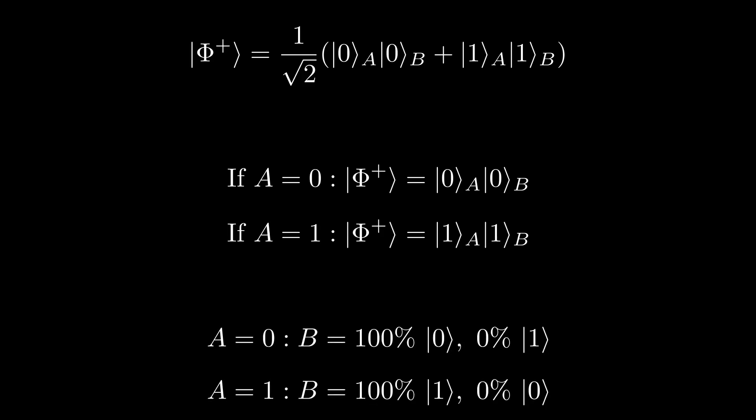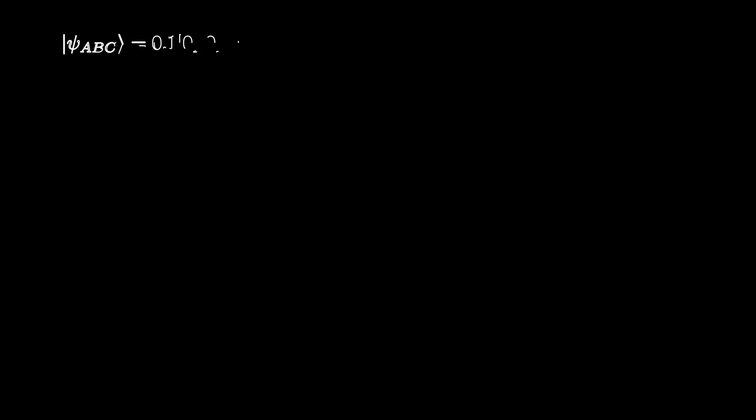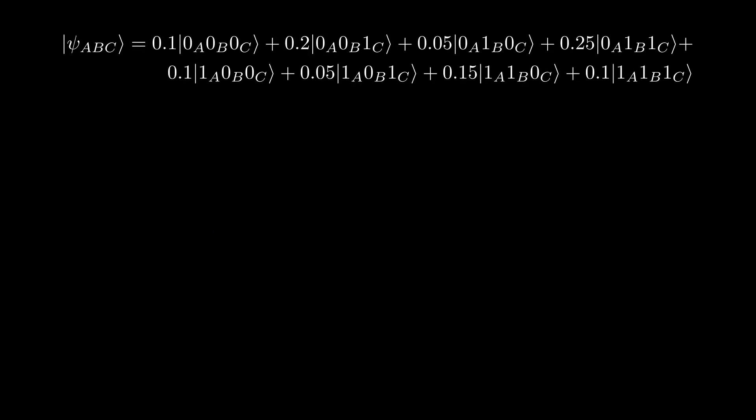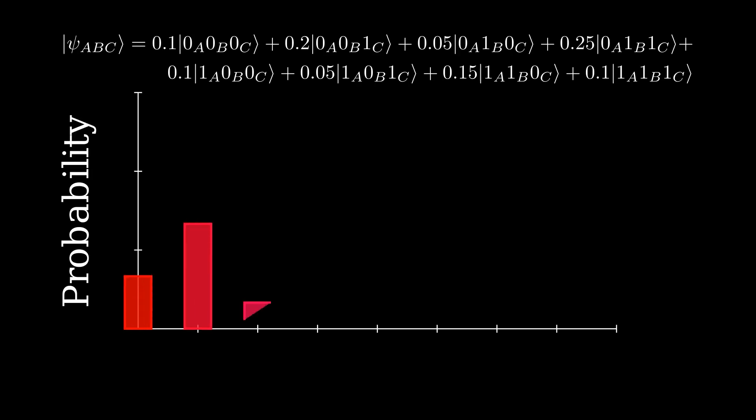For many qubits, we can write out the superposition states as long sums, where each possible combination of all of the qubits is given some weight or probability. Okay, I know that was a lot, but it's necessary background to understand the rest of the algorithm.